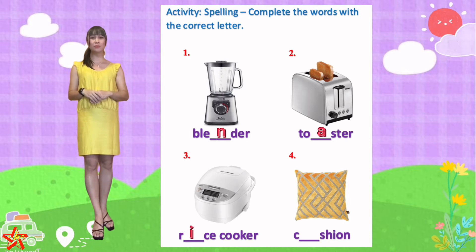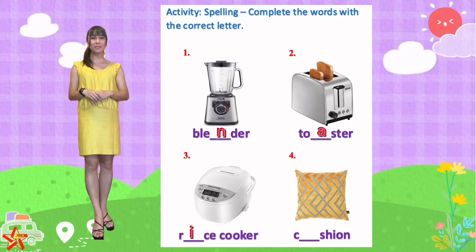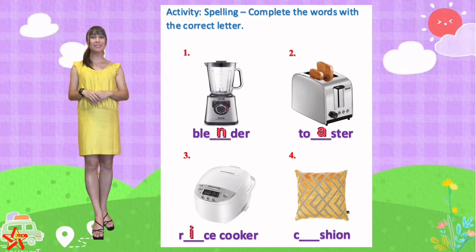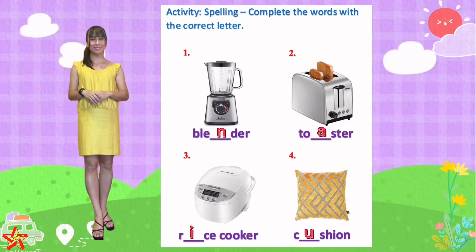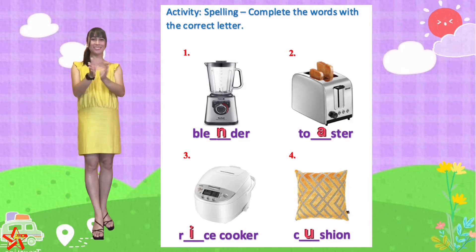And the last, number four, cushion. What is the missing letter? It's letter U. C-U-S-H-I-O-N. Well done. Very good.